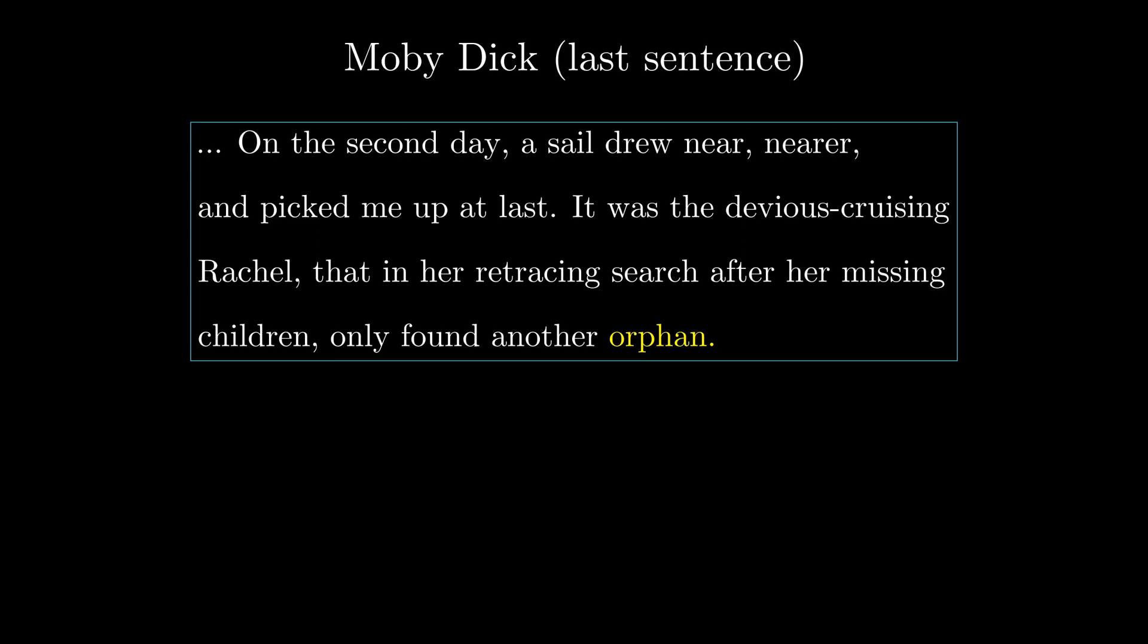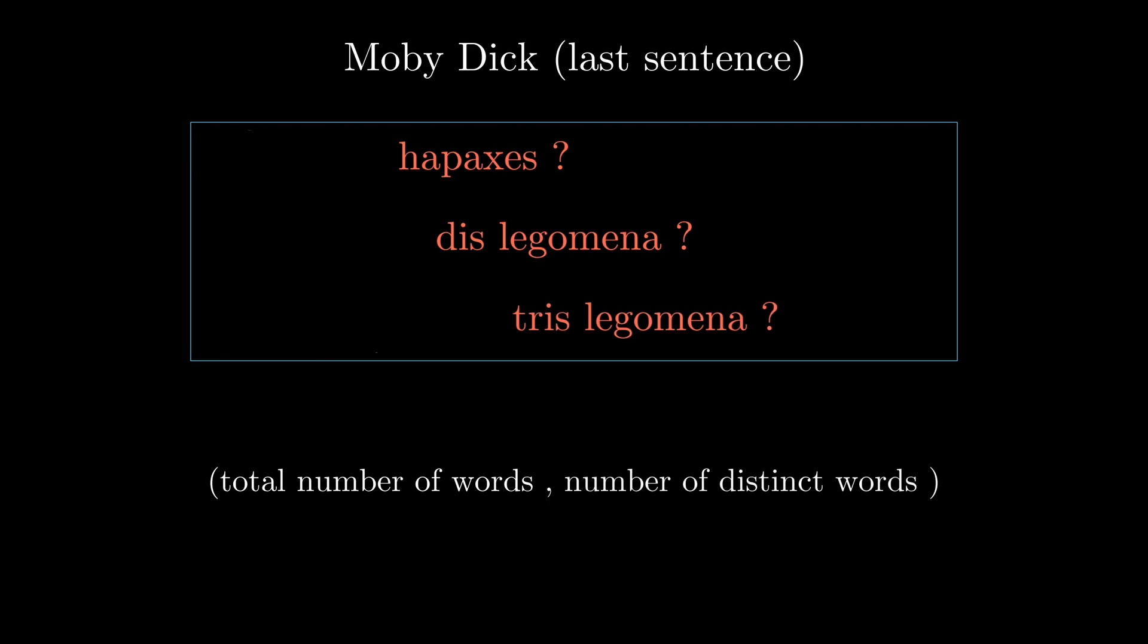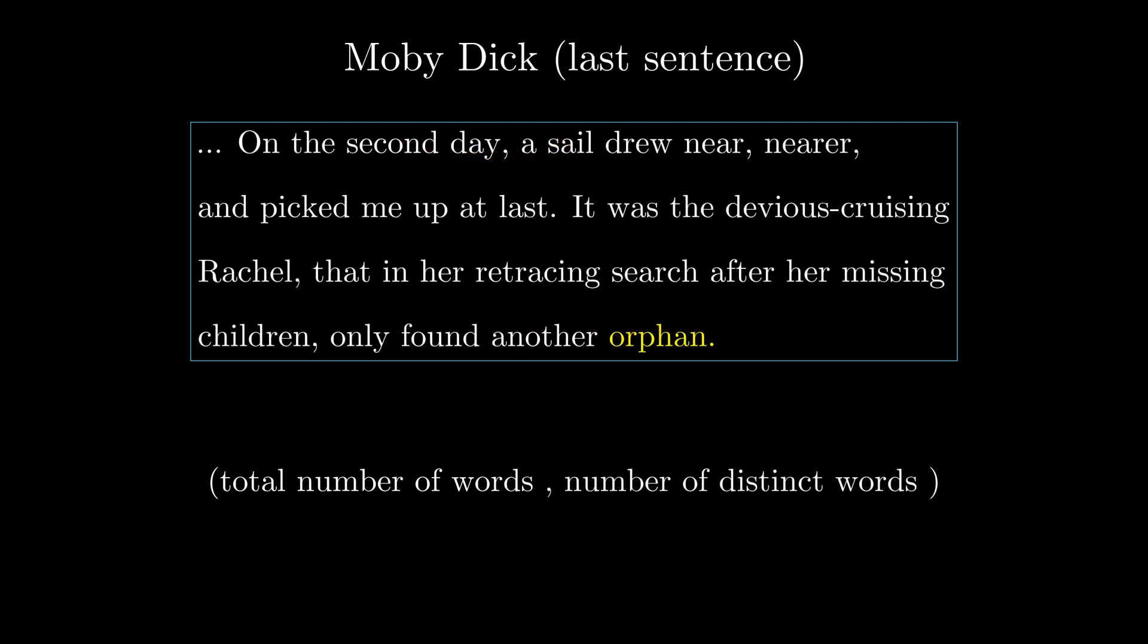Now, imagine you don't see the exact text of the book, and you only know two things: the total number of words, and the amount of distinct words, or types. Is it possible to predict the number of hapexes you have, and generally the number of n legomena for all n?